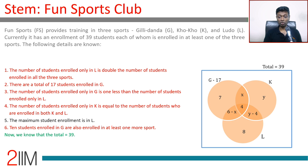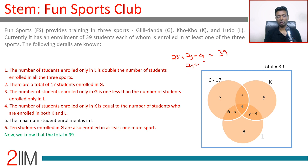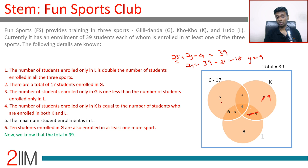With the total being 39, we can solve for y. Adding all regions: 7 plus 10 is 17, plus 8 is 25, plus (y minus 4) plus y gives 25 plus 2y minus 4 equals 39, so 2y equals 18 and y equals 9. Therefore only-K is 5 and K∩L is 9.